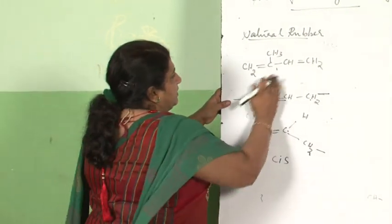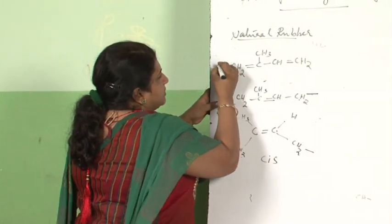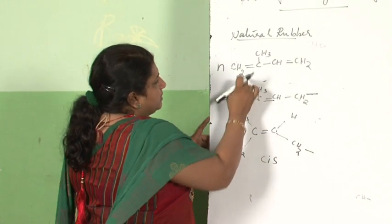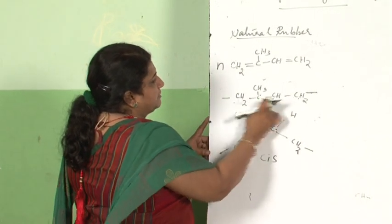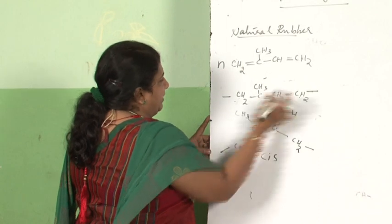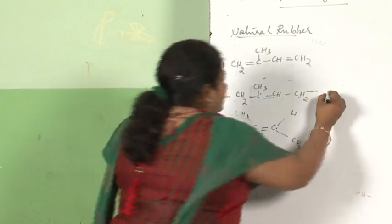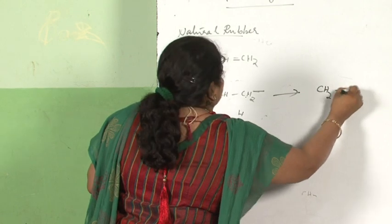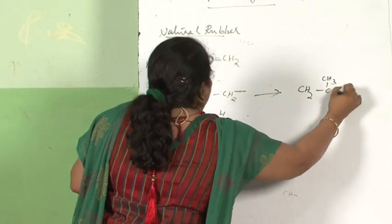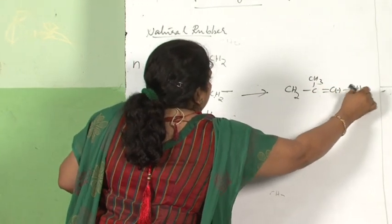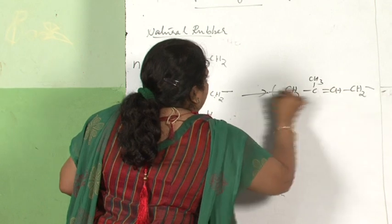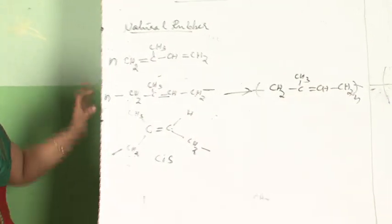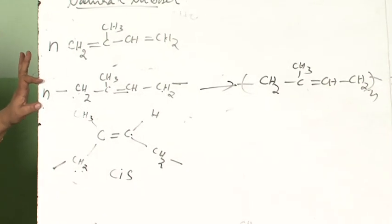N molecules of isoprene combine: the bond shifts to the middle and the two ends become free valencies. So the polymerized structure is written as CH2-C(CH3)=CH-CH2 repeated N times. This is polyisoprene — natural rubber is polyisoprene.